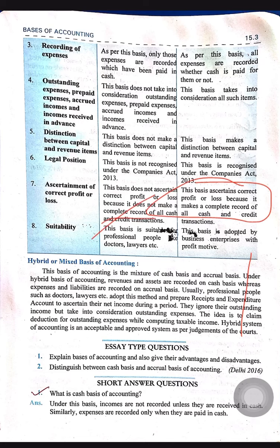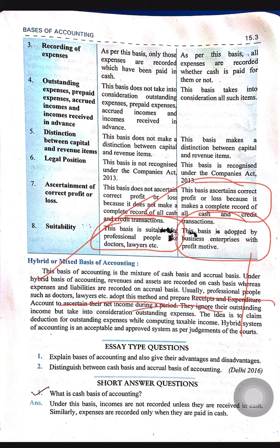Regarding suitability: cash basis is suitable for professionals like doctors, lawyers, and teachers. Accrual basis is suitable for business. There is also hybrid or mixed accounting, which combines both methods and is used by professionals like doctors and lawyers when they prepare receipt and payment accounts and income and expenditure accounts.